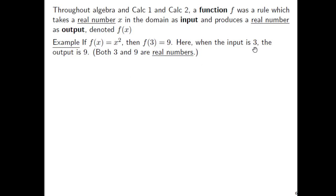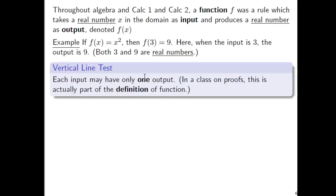Here, when the input is 3, the output is 9. Input's the real number 3, the output then would be the real number 9. Both 3 and 9 are real numbers, and you know about the vertical line test that each input can only have one output. In fact, in a class on proofs, this matter about the vertical line test is actually part of the definition of a function.